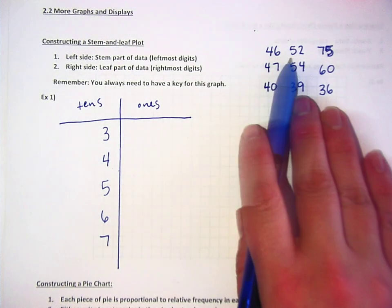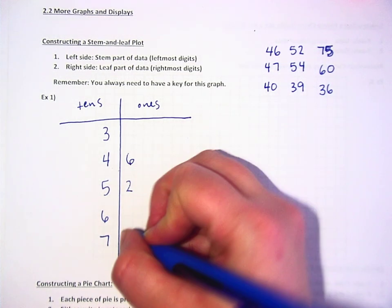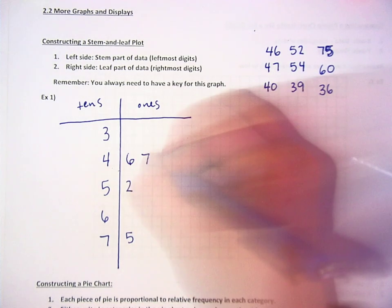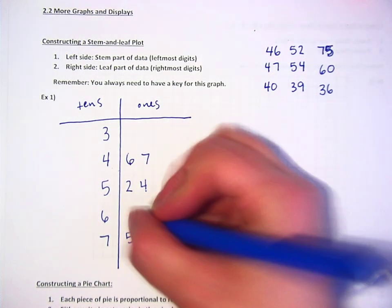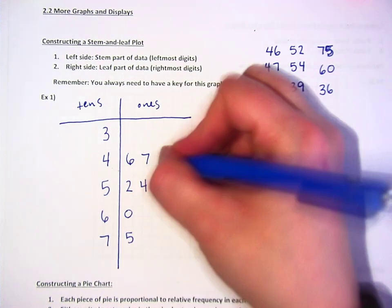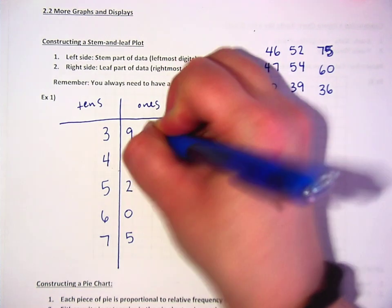And then you line up the ones next to it. So like a 46 would look like this. And then here's a 52 and a 75, a 47, 54, 60, 40, 30, nine, and 36.